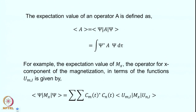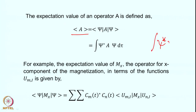The expectation value is represented in standard bra-ket notation. If A is the observable, we write the expectation value as ⟨ψ|A|ψ⟩, where the complex conjugate is on the bra side. In integral form, this is ∫ψ* A ψ dτ, where we assume the wave function is normalized so that ∫ψ*ψ dτ = 1. The volume element dτ goes over all variables in the spin system.